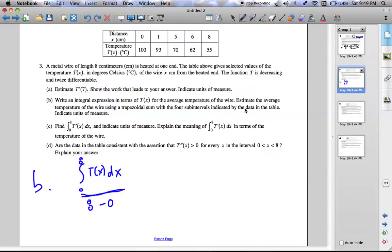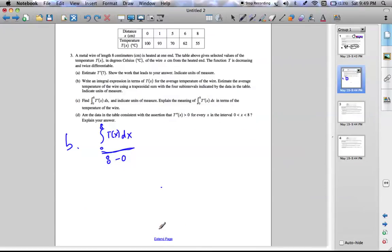So now it's asking for you to estimate the average temperature of the wire using a trapezoidal sum with four subintervals indicated by the data in the table. This is a pain. So hopefully you don't get this on the AP, especially because these intervals are not all the same.